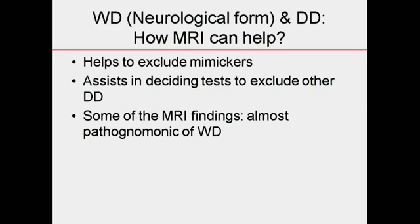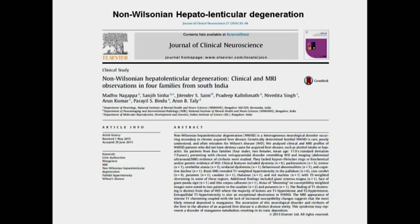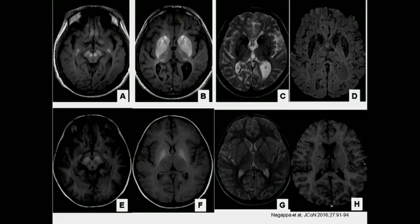Some MRI findings are almost pathognomonic of Wilson's disease. One common differential is non-Wilsonian hepatolenticular degeneration, where patients have extrapyramidal symptoms but don't have Wilson's. We looked at the various MRI changes of non-Wilsonian hepatolenticular degeneration — they are almost similar, including midbrain and putamen changes.